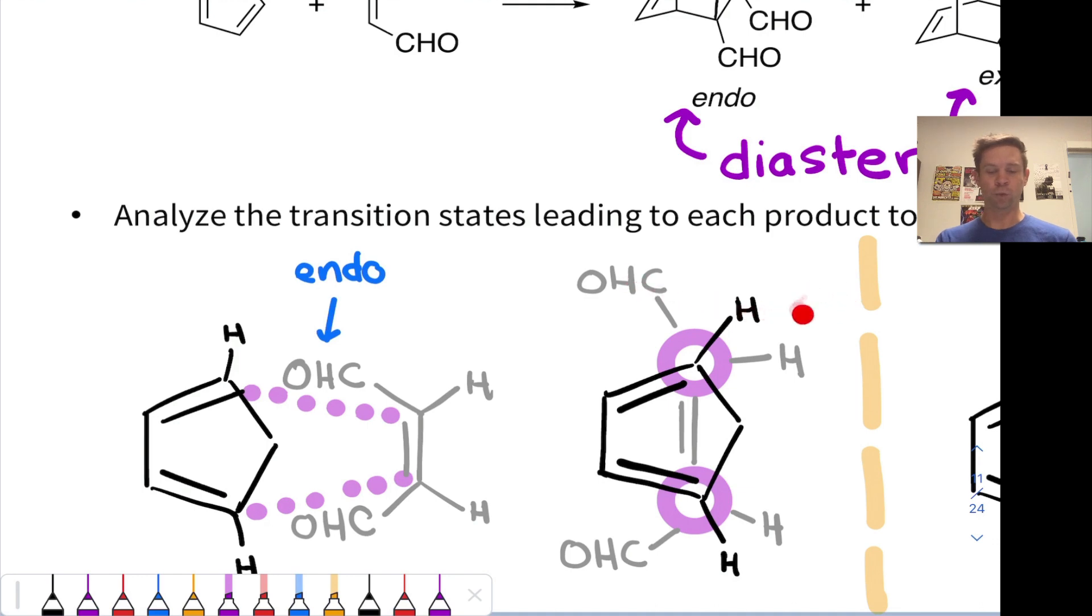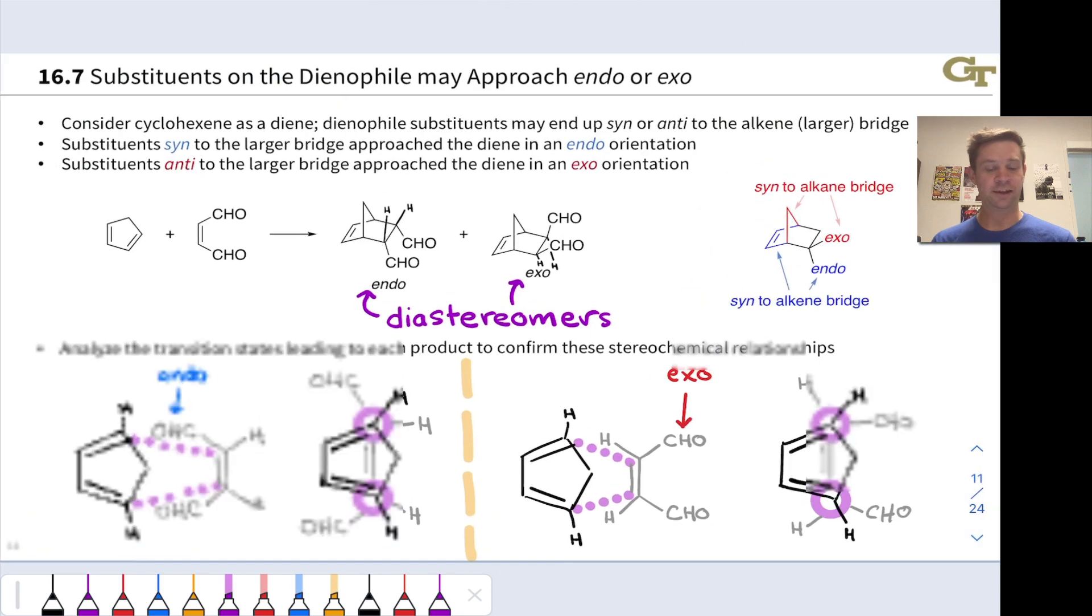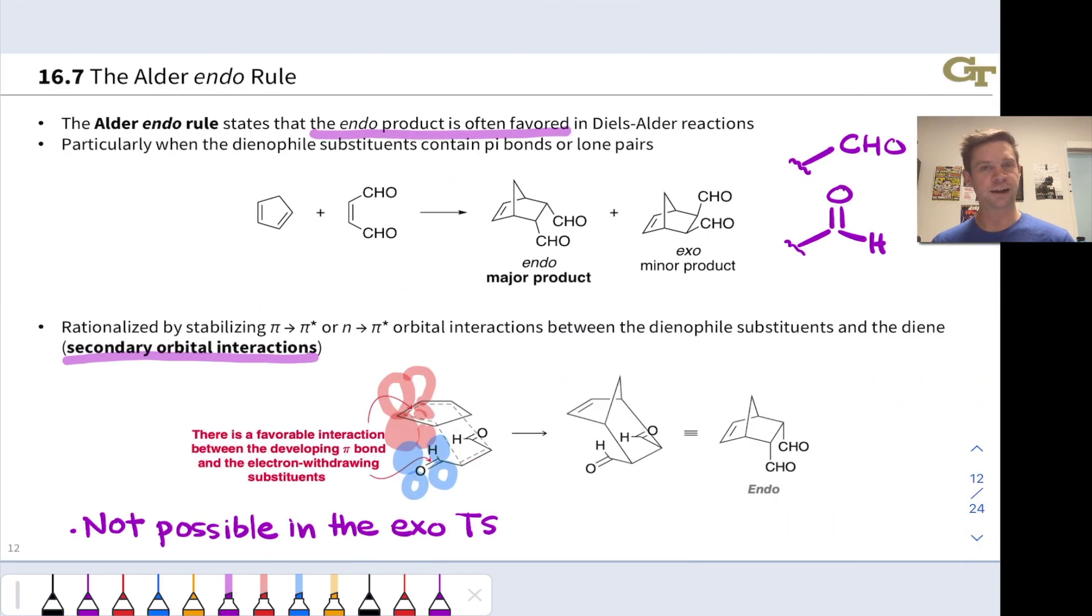If I flip over the dienophile, that moves the CHO groups way out here. And so now they're nowhere near carbons two and three of the diene. And that's what's going on in the exo transition state. Now these groups have no orbital overlap whatsoever with carbons two and three of the diene, because they're nowhere near those carbons. So that stabilizing secondary orbital interaction is missing in the transition state that leads to the exo product. This is why the endo product is the major product.